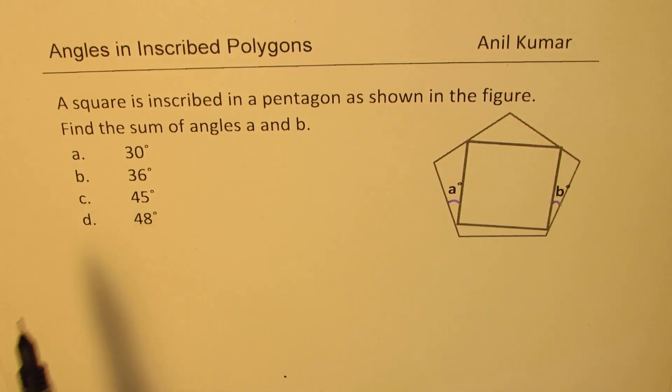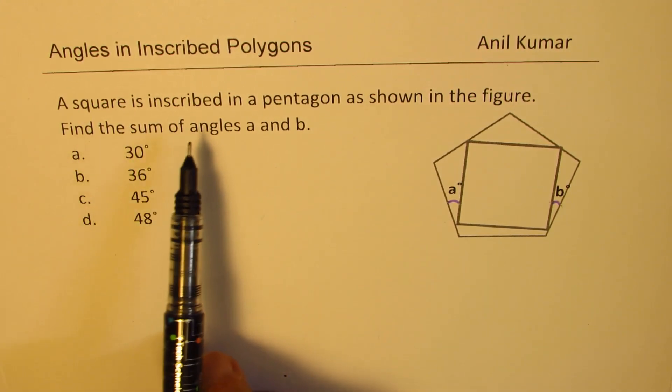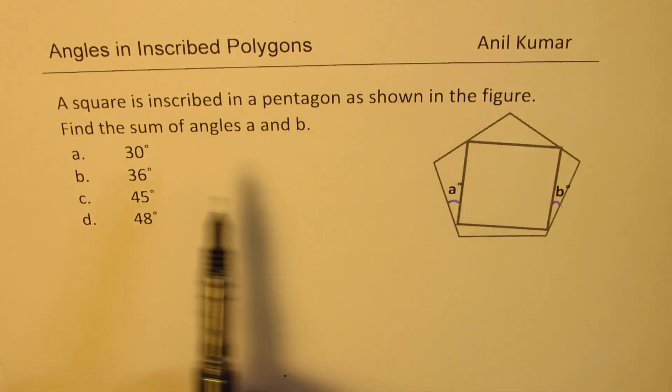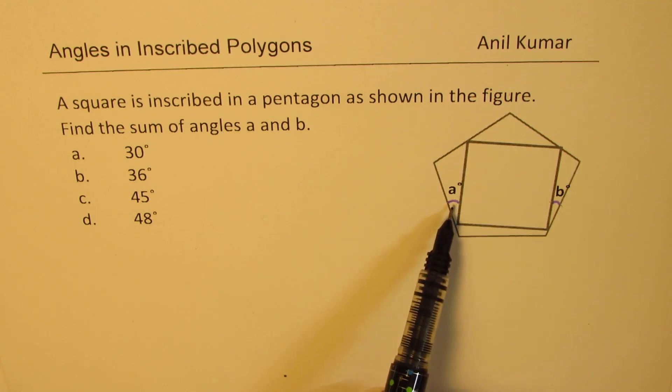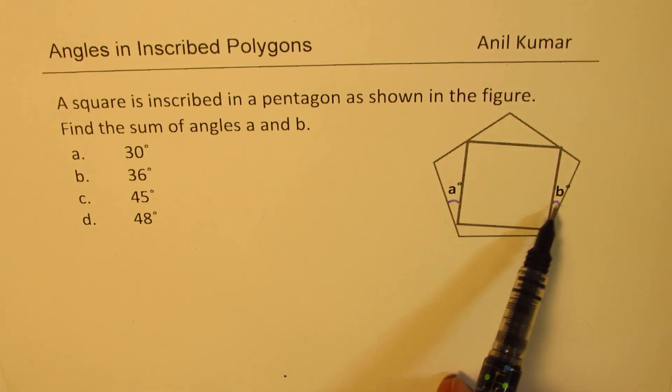Here's a very interesting question. A square is inscribed in a pentagon as shown in the figure. Find the sum of the angles A and B. That means you need to find the sum of these two angles. It's a multiple choice question with four options. You can pause the video, answer the question, and then look into my suggestions.